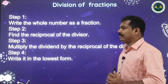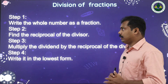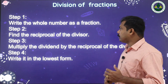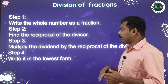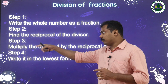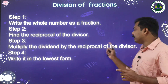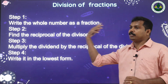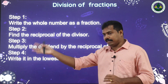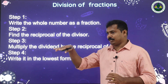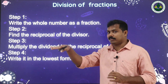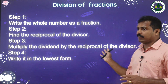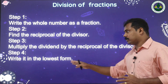The steps for division of fractions: first, write the whole number as a fraction. Second, find the reciprocal of the divisor. Third — the important step — multiply the dividend by the reciprocal of the divisor. Convert the divisor to its reciprocal, then multiply the first number with the reciprocal of the second number.